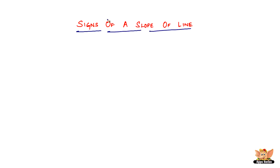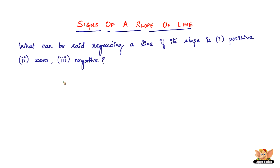The question is: what can be said regarding a line if its slope is positive, zero, or negative? First, let us look into what can be said if the slope of a line is positive.